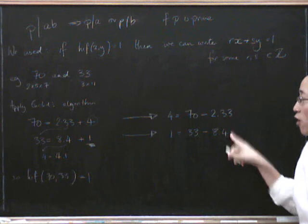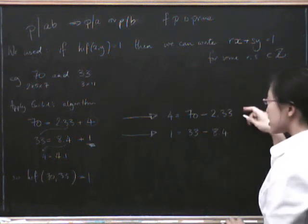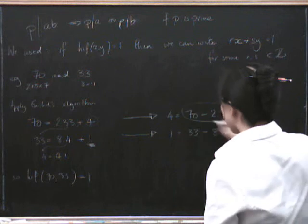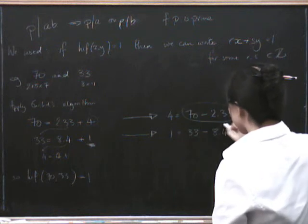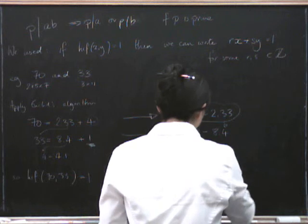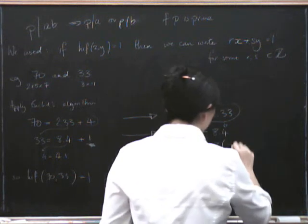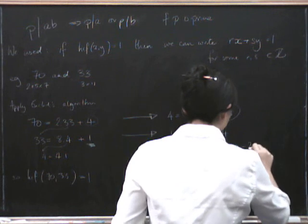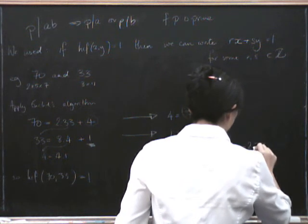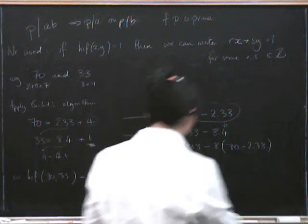But we know what 4 is in terms of some 70s and some 33s because we've got it right here. So we now substitute this into that 4. And we get that that's the same as 33 minus 8 times. Now we put in the expression we got for 4. And now we gather together our 70s and our 33s.